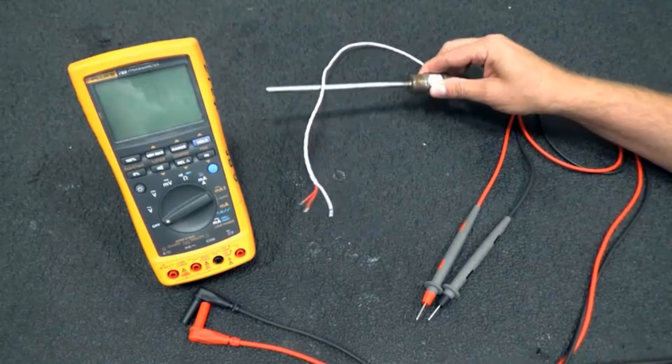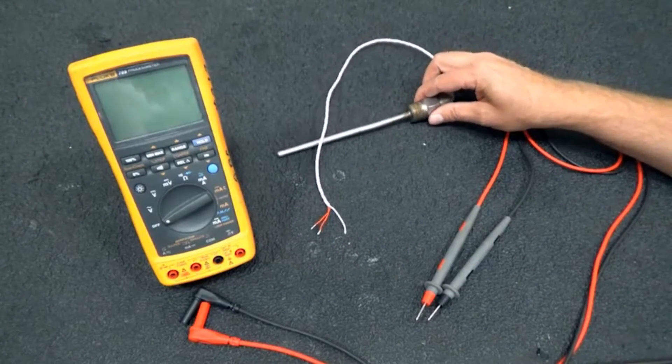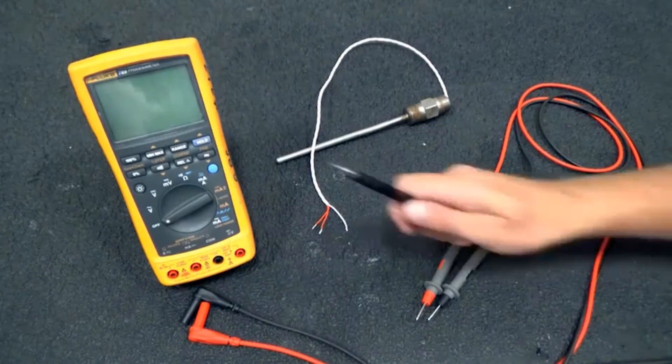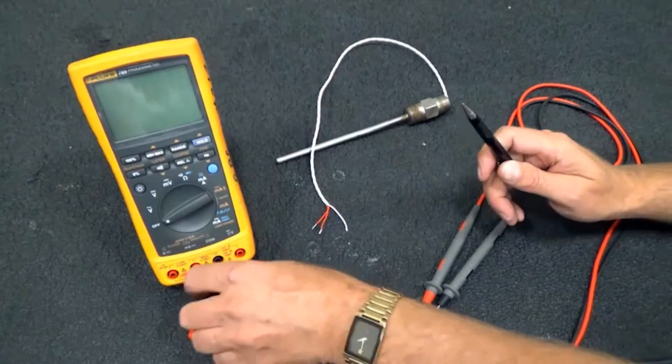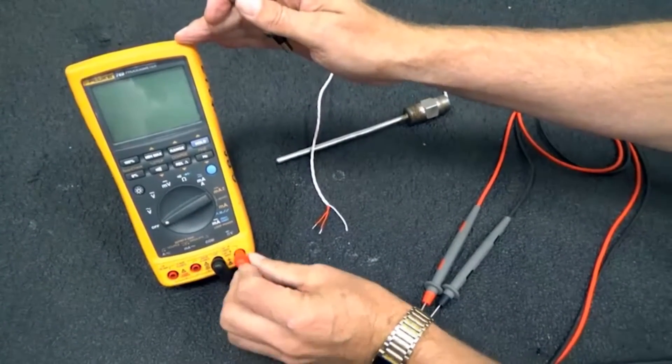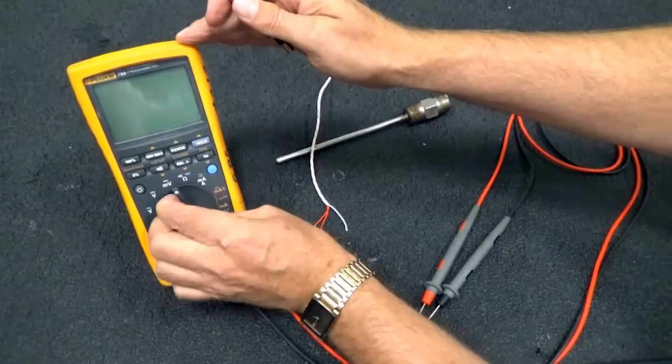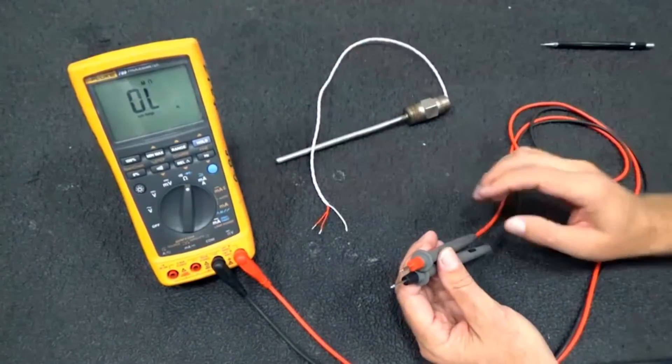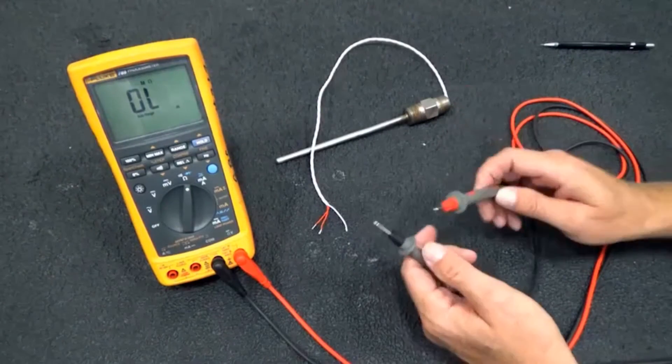We want to measure the resistance of this RTD, so we want to measure ohms. You can see that ohms is shown right here, so we're going to plug the meter into the common and we'll plug into ohms here, and I'll go ahead and turn it on to ohms. We see we're reading in mega ohms, we have an open circuit, which is what that means.